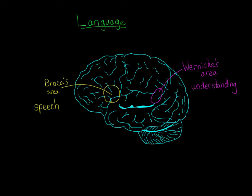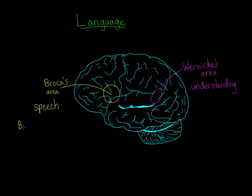When Broca's area is damaged, people tend to have trouble producing speech. Their words become halting or slurred. This is called non-fluent aphasia or Broca's aphasia. I remember this by thinking that Broca's aphasia means broken speech, and aphasia is just any type of disorder that involves language.